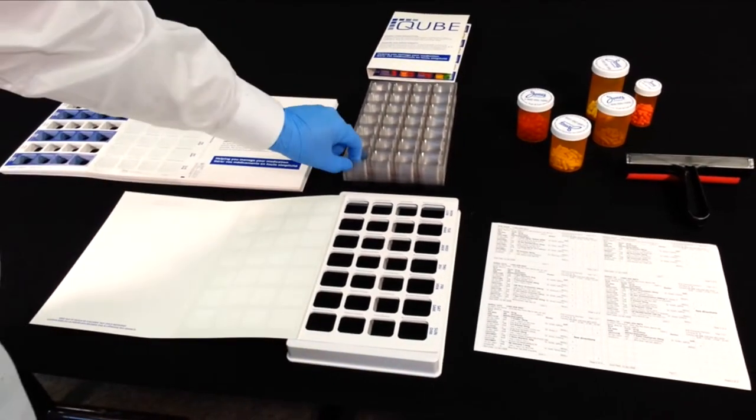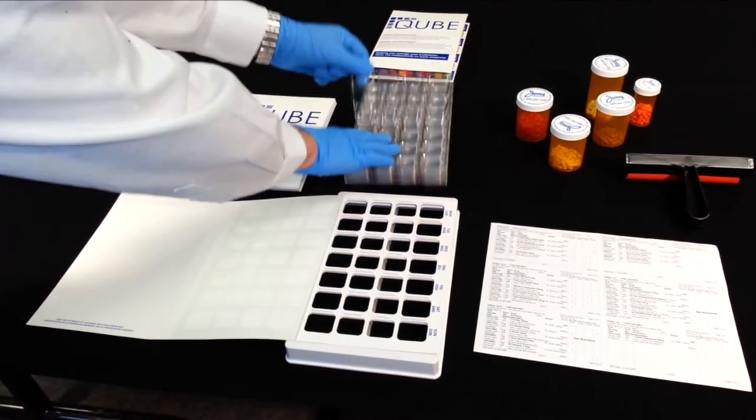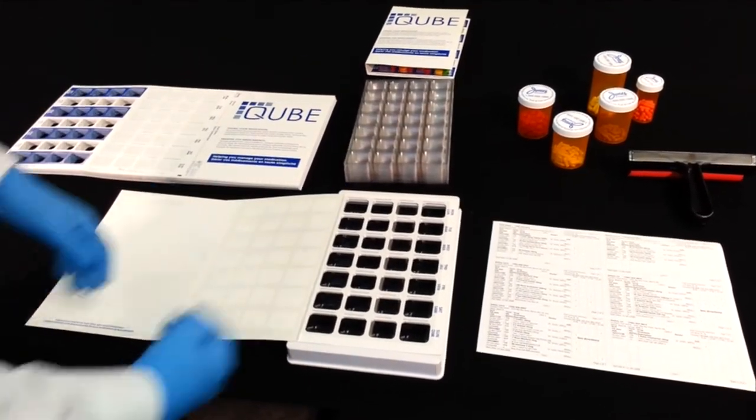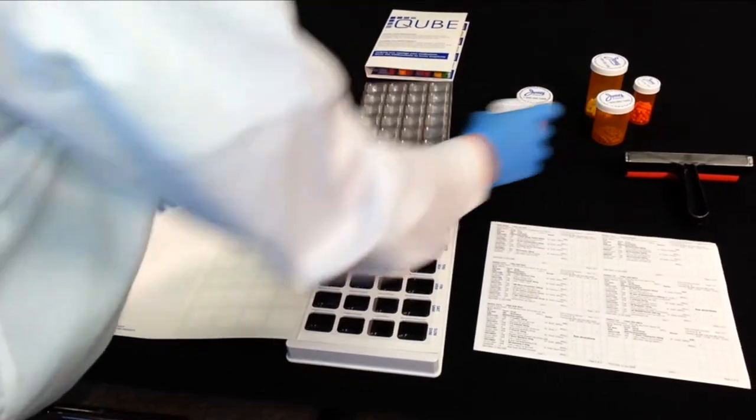Next, place a blister through the holes into the sealing tray. You are now ready to fill the blister with medication for each appropriate time pass as indicated on the patient summary label.